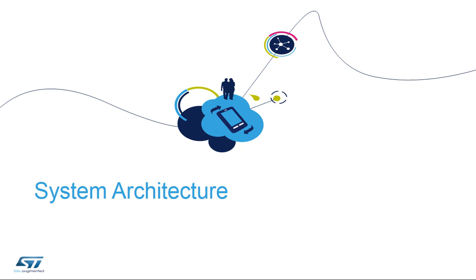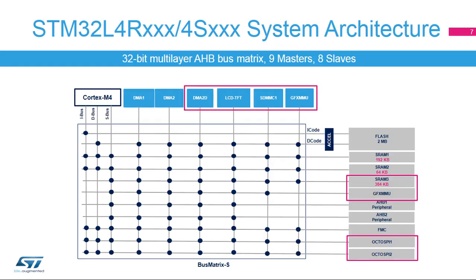Let's look at the system architecture changes with the STM32L4R/S-series. The main system architecture consists of a 32-bit multilayer AHB bus matrix that interconnects nine masters and eight slaves. The main differences with STM32L476/L486 devices are highlighted with pink squares.